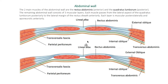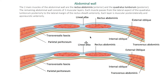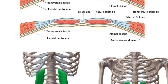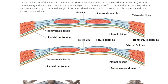Looking at the diagram, you can see the rectus abdominis muscle and the rectus sheath, which is the aponeurotic end of the three muscles: external oblique, internal oblique, and transversus abdominis. Then we also have the transversalis fascia and the parietal peritoneum — not the visceral peritoneum, but the parietal peritoneum.